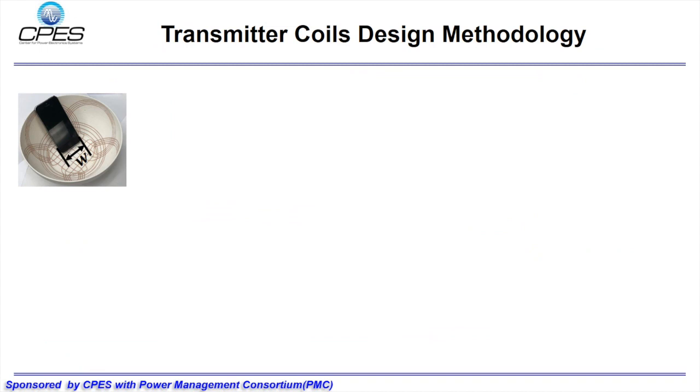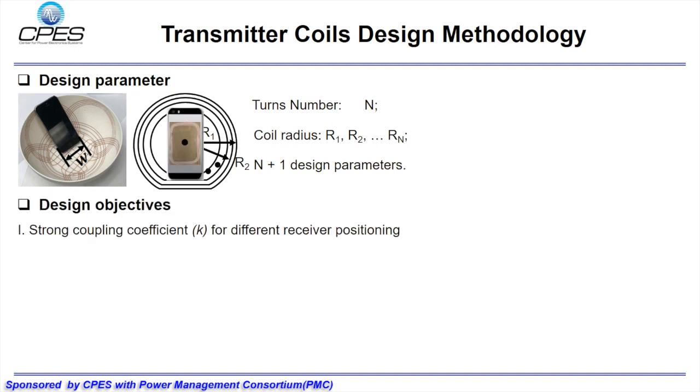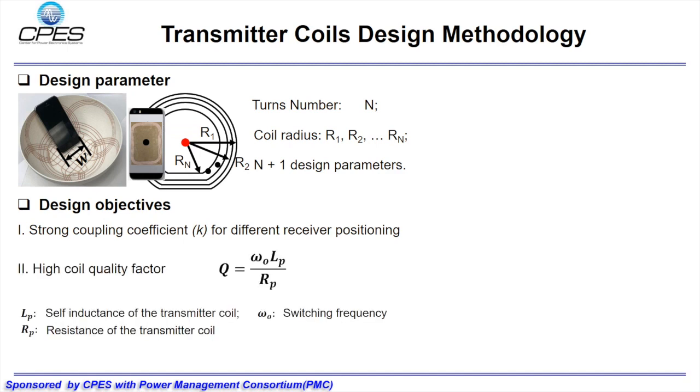As for the detailed coil design, the design parameters and design objectives are shown here. The design parameters include the turns number and the coil radius of each turn, which have n plus 1 parameters. The design objective is to achieve a strong coupling coefficient k between transmitter and receiver coils for different receiver positioning. And to have efficient power transfer, the coil quality factor q of the transmitter coil should be as high as possible.